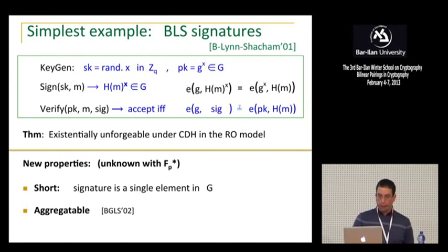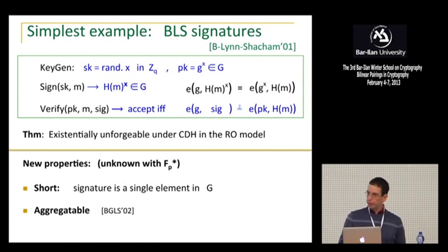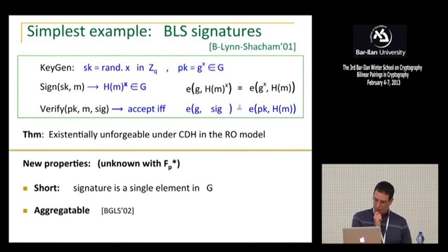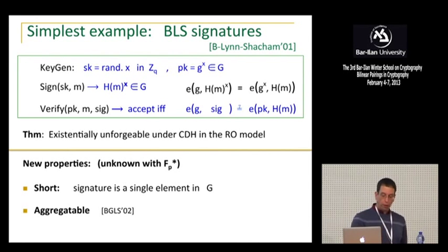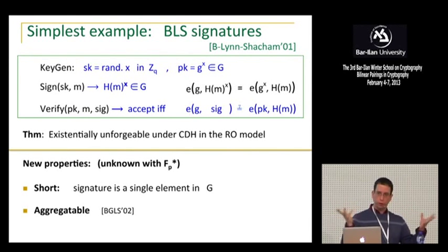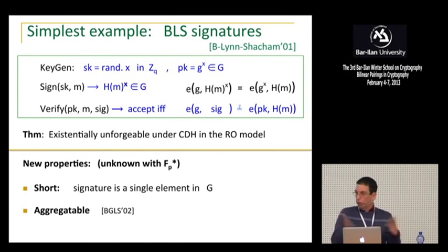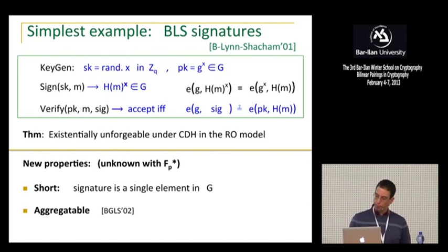So you can take exponents out and put them back in. In a lot of ways, the reason pairings are so useful is because you can move the exponents around from one side of the pairing to another. That makes a lot of things work which were not possible without pairings. There's a really simple theorem you can prove that under the computational Diffie-Hellman assumption, the signature is secure in the random oracle model. And we're going to talk about that tomorrow — there are ways to expand this signature a little bit so it becomes actually secure even without random oracles.